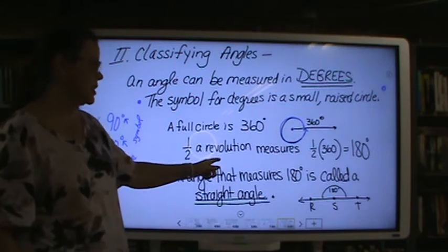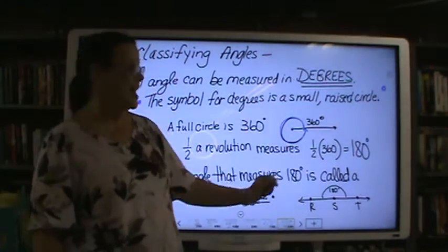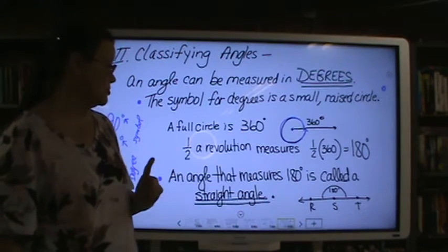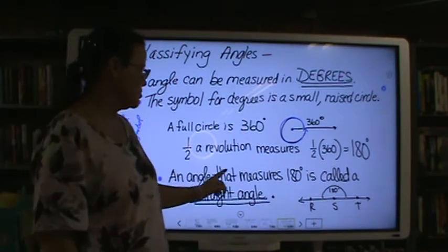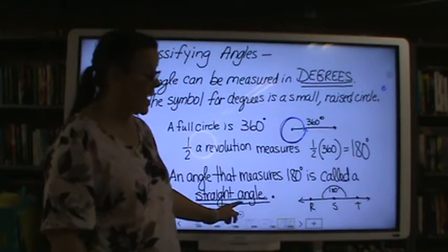Half of a revolution measures 180 degrees. That is what a line, a straight line measures 180. An angle that measures 180 is called a straight angle.